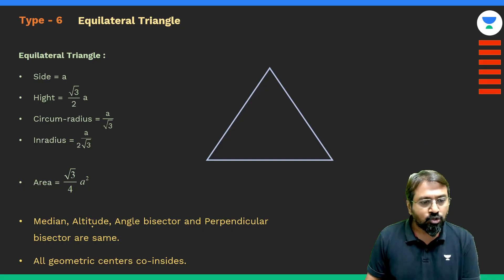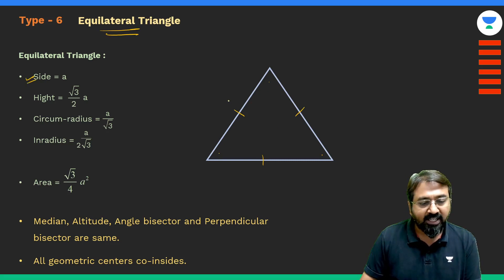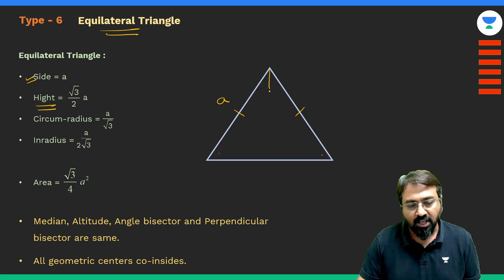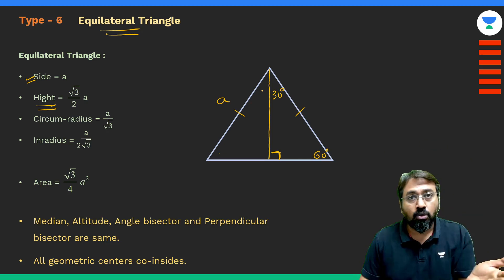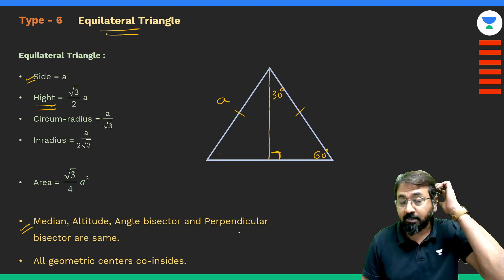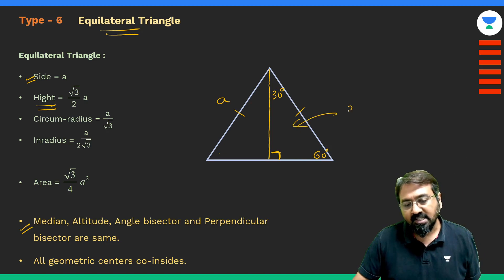Let's understand equilateral triangle. All the sides are equal, and each angle is 60 degrees. If I take the side of an equilateral triangle as 'a', then the height will be (√3/2) × side. If I drop a perpendicular in an equilateral triangle, this angle is 90°, this is 60°, and this has to be 30°. The perpendicular will also be the angle bisector. In an equilateral triangle, the median, altitude, angle bisector, and perpendicular bisector are all the same line.